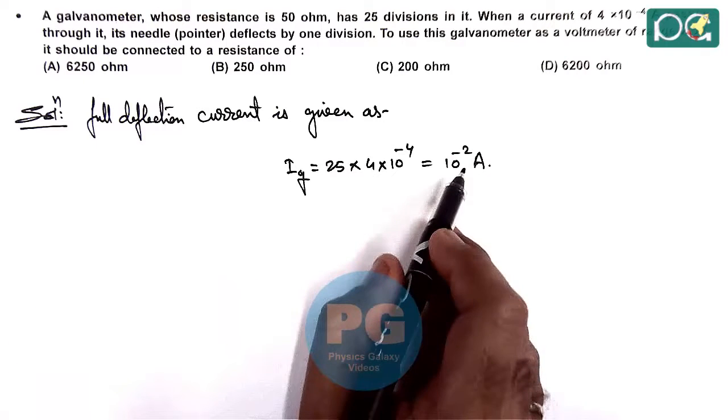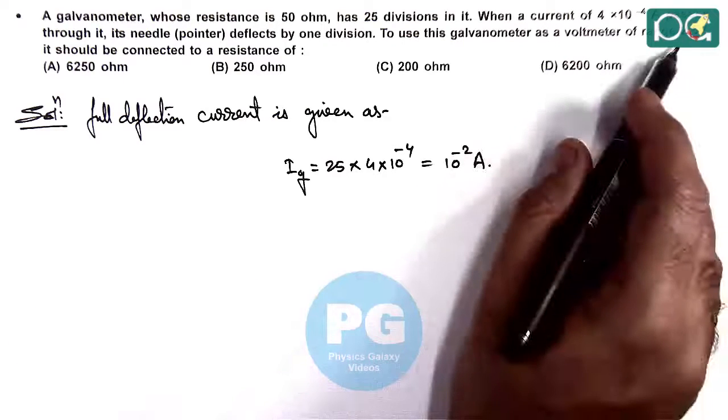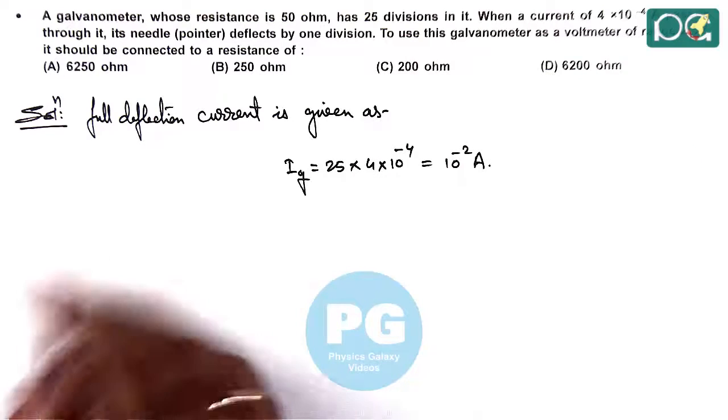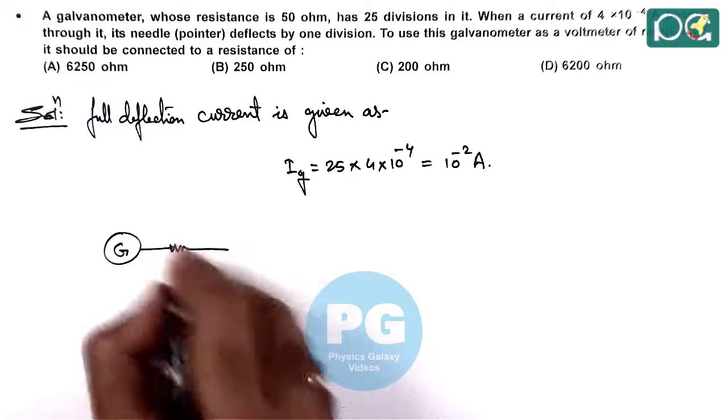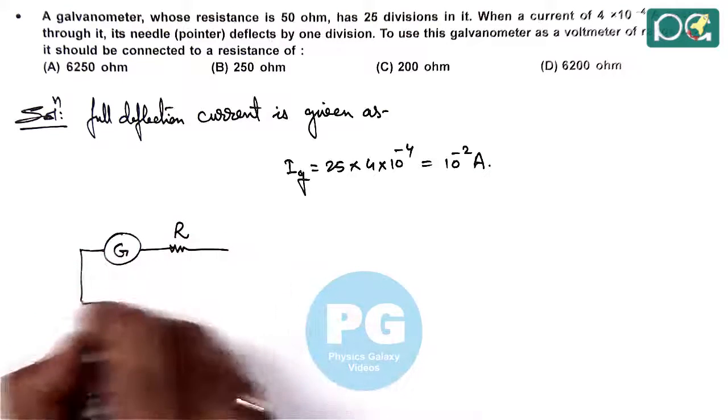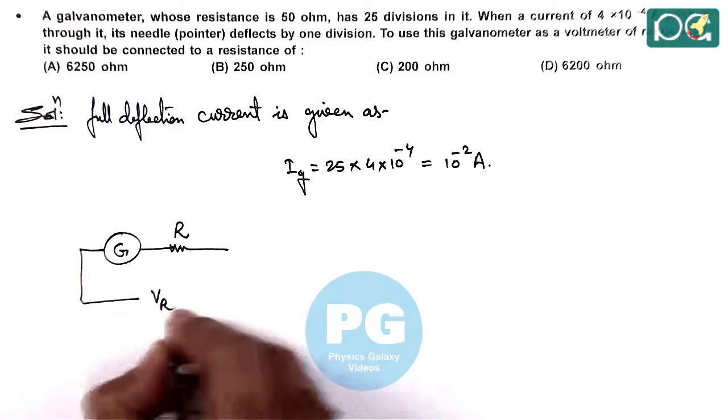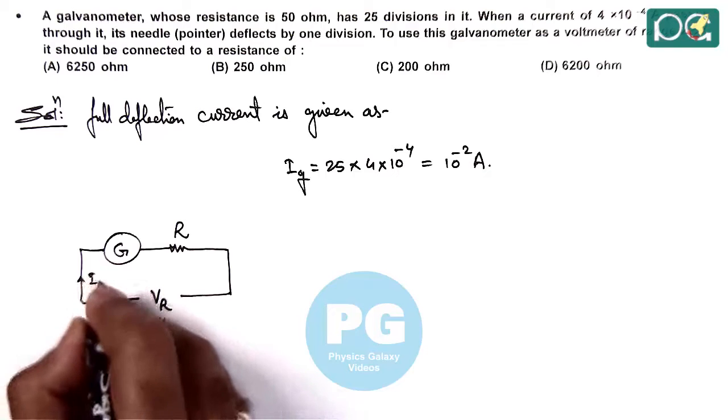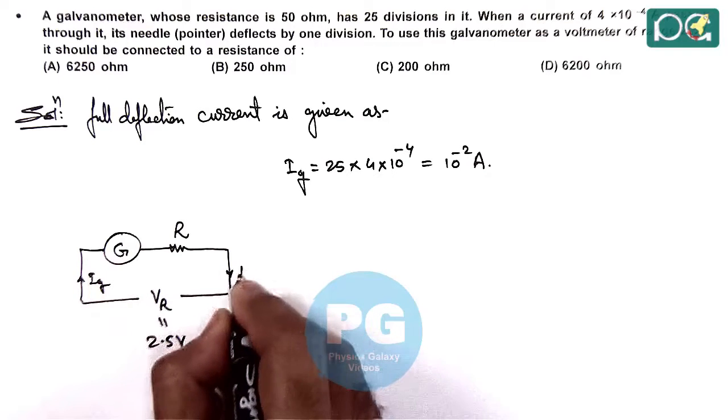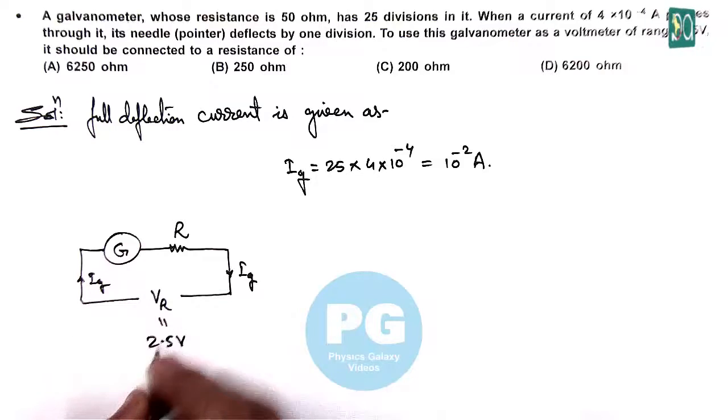We need this current to flow when 2.5 volt potential difference is connected across the galvanometer. So when we connect a resistance in series with this galvanometer and connect V_R, which is the range of the voltmeter (2.5 volts), current I_g should pass through the galvanometer to give full deflection at 2.5 volts.